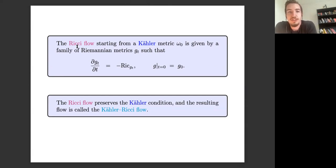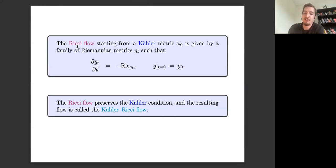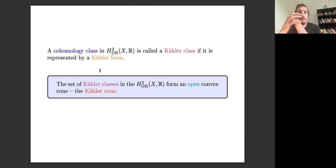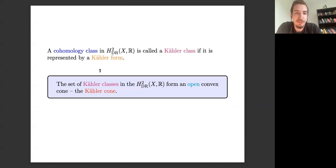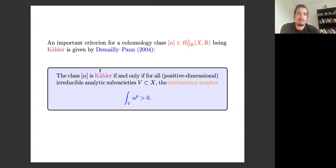The Ricci flow starting from a Kähler metric will preserve the Kähler condition, and the resulting flow is referred to as the Kähler-Ricci flow. The best argument is likely for holonomy reasons: it preserves holonomy and the Kähler condition is expressed via a holonomy condition. A cohomology class in degree two is said to be a Kähler class if it can be represented by a Kähler form, and the set of all Kähler classes forms an open convex cone — what we refer to as the Kähler cone.